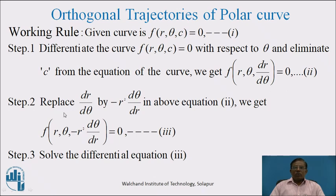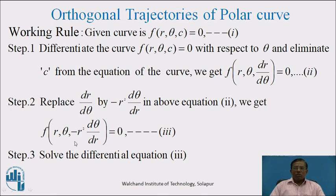Now, in step 2, replace dr/dθ by minus r² dθ/dr in equation 2. We get a differential equation f(r, theta, -r² dθ/dr) = 0. Denote this equation by 3. So equation 3 is an ordinary differential equation of the orthogonal trajectory. Now, in step 3, we have to solve this ordinary differential equation denoted by 3. We get the required family of polar curves which is orthogonal to the given family of polar curves.